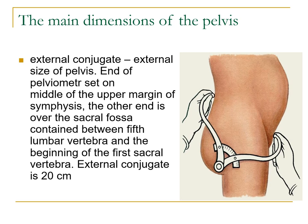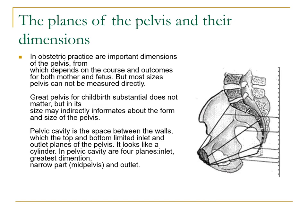Your external conjugate is the external size of the pelvis. One end of your pelvimeter is set on the middle of the upper margin of the symphysis, and the other end is over the sacral fossa between the fifth lumbar vertebra and the beginning of the first sacral vertebra. Your external conjugate is 20 centimeters. In obstetric practice, these are the important dimensions of the pelvis, from which depend the course and outcome for both mother and fetus. However, most pelvic sizes cannot be measured directly.